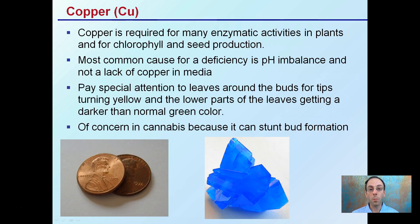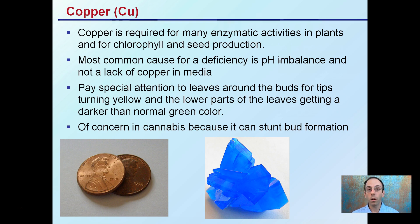Copper is another micronutrient. It's required for many enzymatic activities in plants and for chlorophyll and seed production — all very vital tasks. The most common cause for deficiency is a pH imbalance, not a lack of copper in the media. This is why monitoring pH is important, because copper in particular can be drastically affected by pH swings. Pay special attention to leaves around the buds or tips turning yellow, and lower parts of leaves getting a darker-than-normal green color — these can indicate a copper deficiency. It's of concern for cannabis because it can stunt bud formation, which is where cannabinoid production occurs, impacting your final harvest.